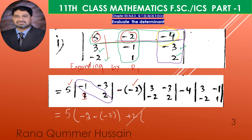Then plus for the third minor — you expand: three times two is six, minus six. Then minus four: from here you get three times one is three, and minus two. So dear students, all the terms are coming together and now you have to simplify them. Let's see on the next slide how we simplify this.